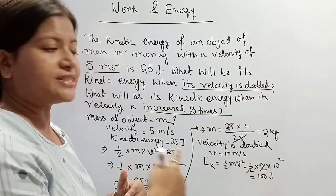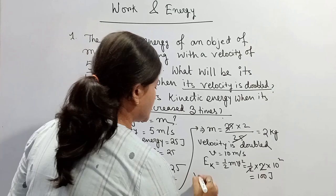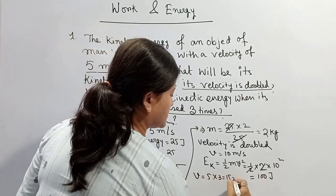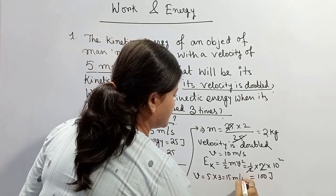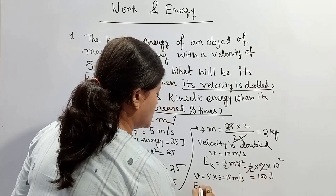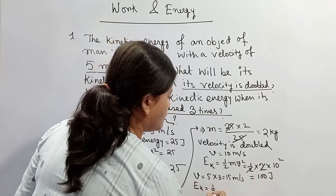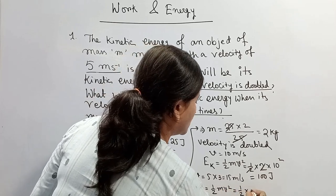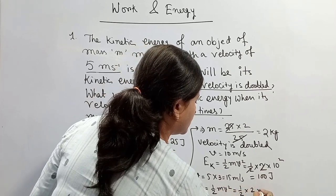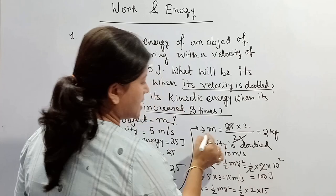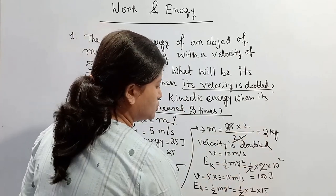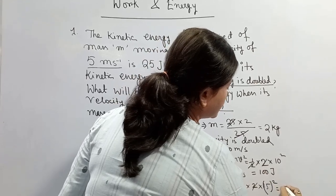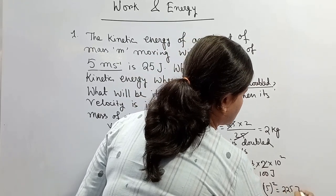Now what will be its kinetic energy when velocity is increased 3 times? Velocity increased 3 times means V equals 5 times 3, which is 15 meters per second. So Ek equals half M V squared, that is half into 2 into 15 squared — the 2s cancel — giving 15 squared, that is 225 J.